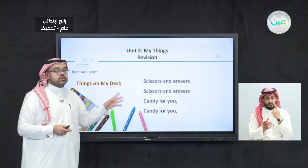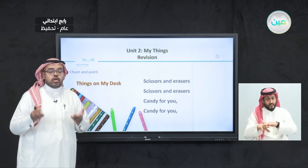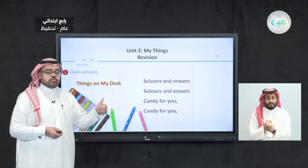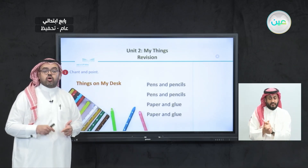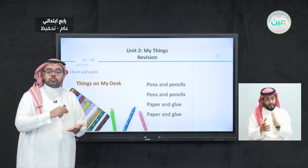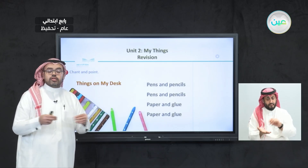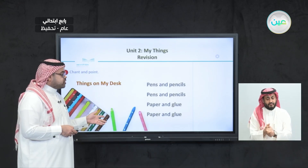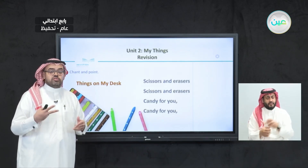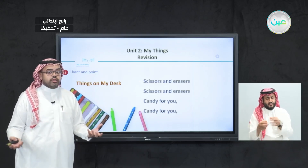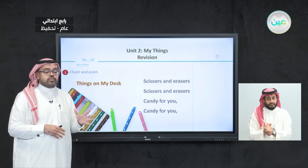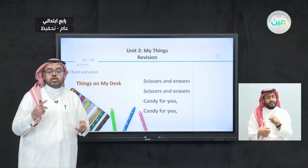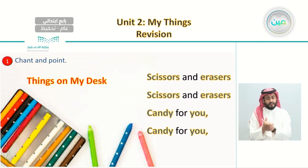In the chant we have five different things you may have on your desk. Pens, where you can write or do your homework. Pencils, where you can draw pictures. Paper, which you can use to draw. Glue, where you can stick papers together. And scissors, which you can use to cut paper and make different shapes. Also erasers, to erase things you've written. And after all that — candy for you!